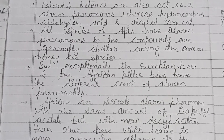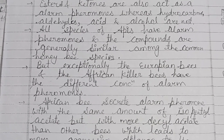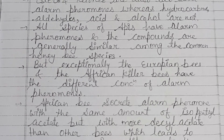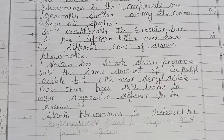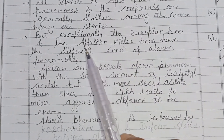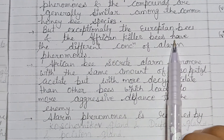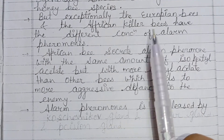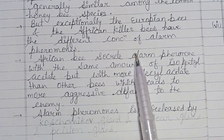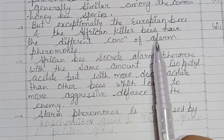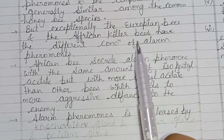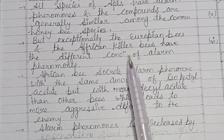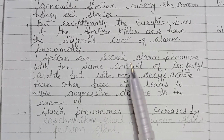All species of bees have alarm pheromones, and the compounds are generally similar among common honeybee species. However, European bees and African killer bees differ exceptionally — they have a different concentration of alarm pheromone compared to other honeybee species.